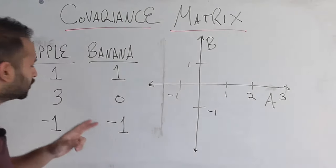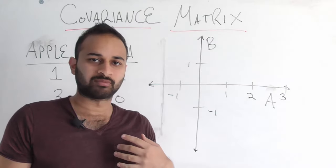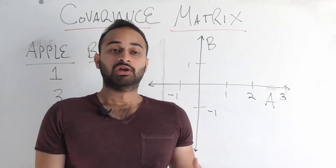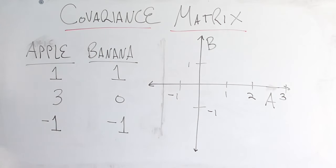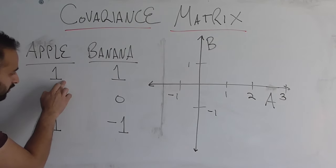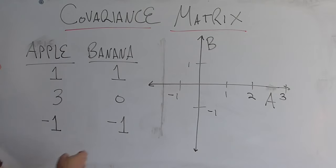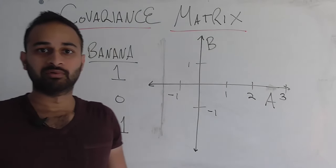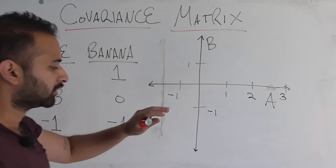Here is our setup. We are researchers trying to figure out if there's any link between the happiness someone derives from eating an apple versus the happiness they derive from eating a banana. So we go out into the world and gather three test subjects — you usually want more, but this is a toy example. They are enumerated in a table: test subject one gets one unit of happiness from an apple and one unit from a banana. Test subject two gets three units from an apple and nothing from a banana. And test subject three gets negative one from eating an apple and negative one from a banana because they really don't like fruits.